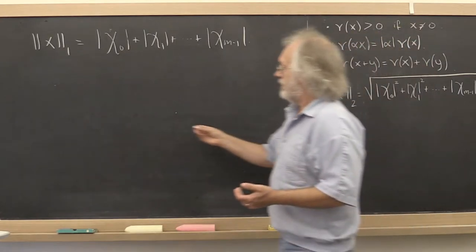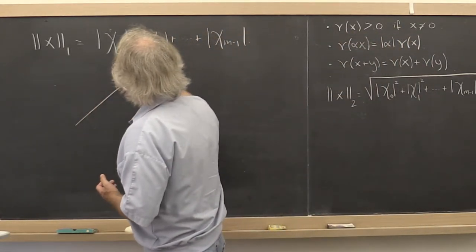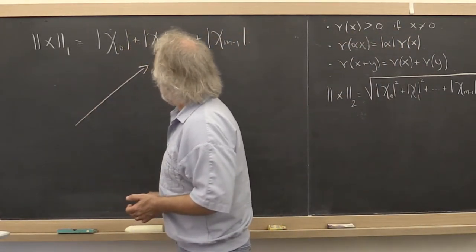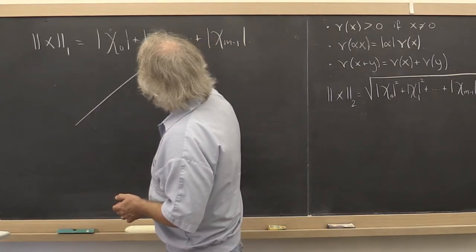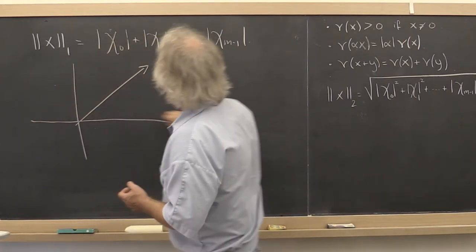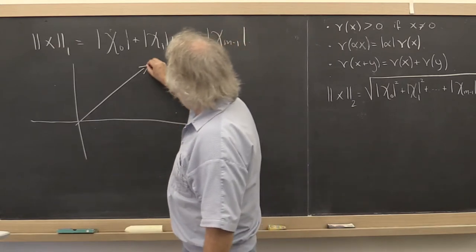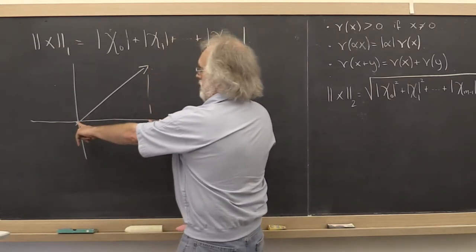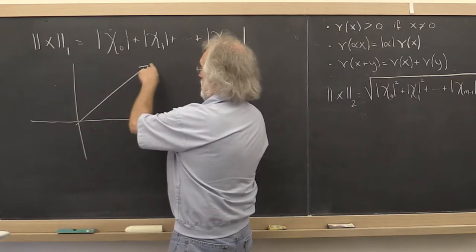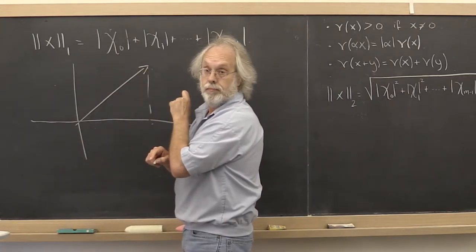So if we have a vector in two space, here's our vector. And let's say we place this on our coordinate system. Then the 1-norm is simply this length plus this length. Simple.